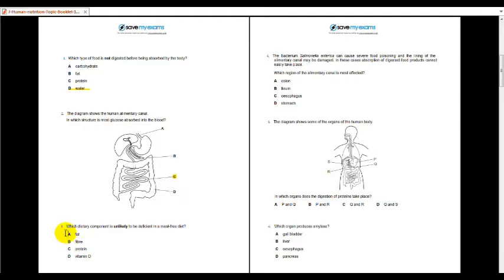Next, which dietary component is unlikely to be deficient in meat-free diet? The answer is fiber. Each dietary component is unlikely to be deficient in meat-free diet. So no meat, there might be a lot of vitamins, minerals and fiber too. Continue on. Number 4, the bacterium salmonella can cause severe food poisoning and the lining of the elementary canal may be damaged. In these cases, absorption of digested food products cannot easily take place. Which region of the elementary canal is most affected? So it must be in the small intestine, which is in the ileum part.